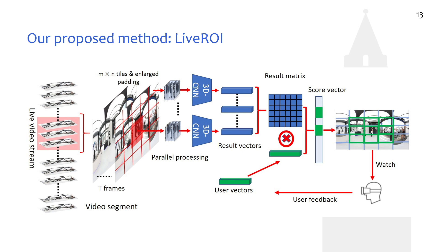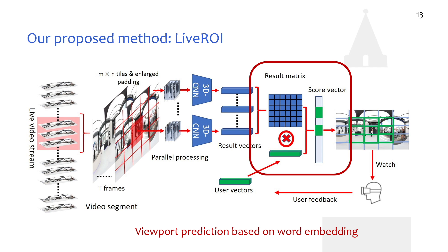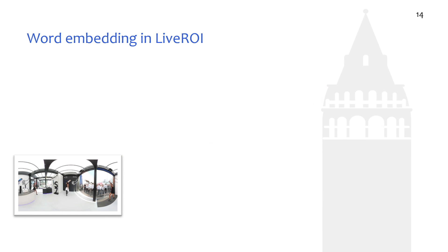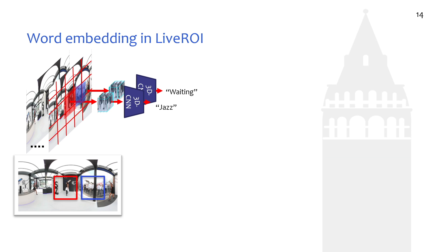Each thread returns action recognition result vectors as a description for the video content of the corresponding tile. We then compare the user preference vector with the action recognition result vector for each tile to find the best matched pairs. The user vector is formed by user feedback based on the action recognition result vectors, indicating the content the user previously watched. However, it's hard for machines to find the best matched pairs among different words. For example, the action in the red tile is 'jazz' and the action in the blue tile is 'waiting,' but the user's preference is 'dancing.' So we need a way for the algorithm to know which pair has closer meanings. We use word embedding to analyze the semantic meanings of each word and calculate the relationship between each pair of words.